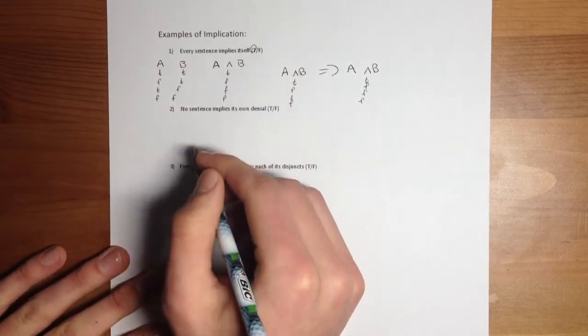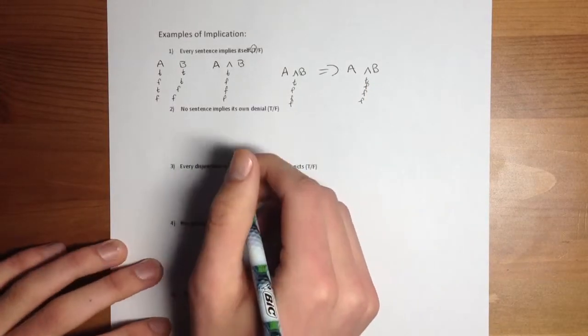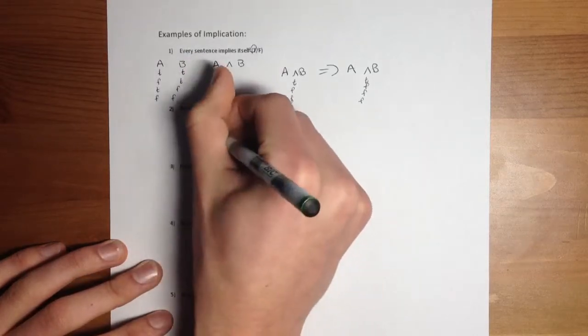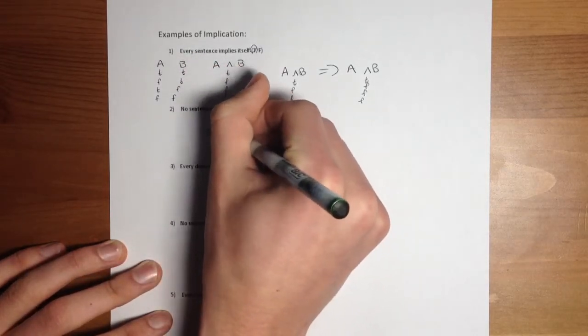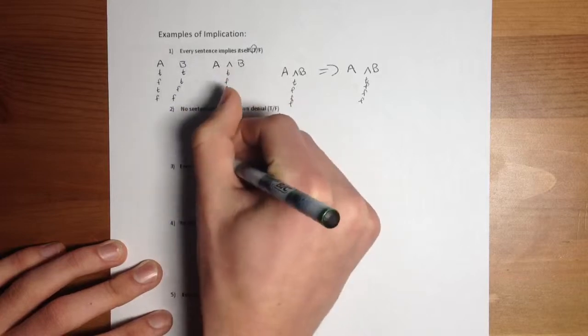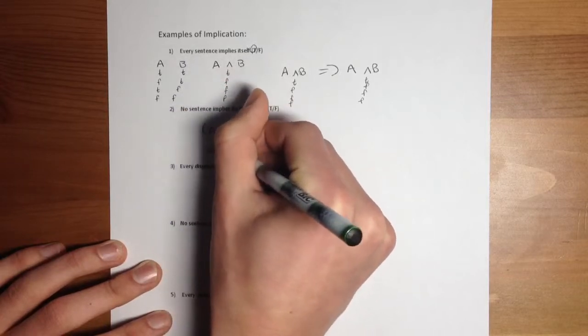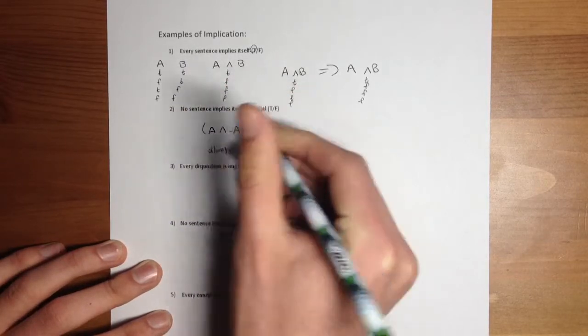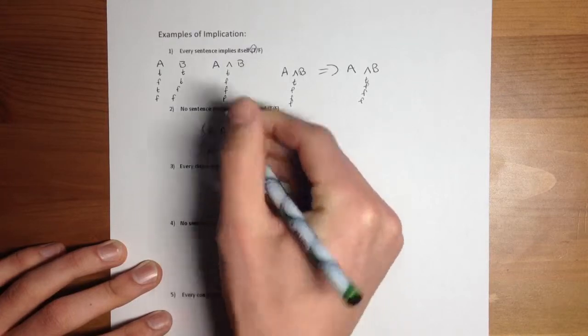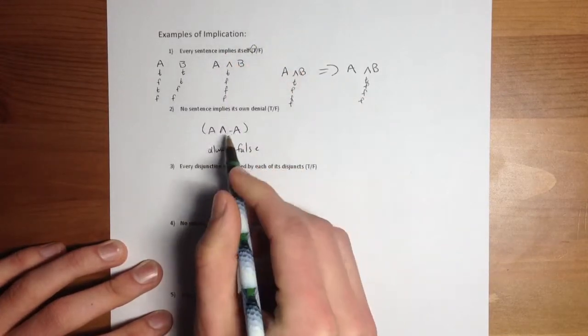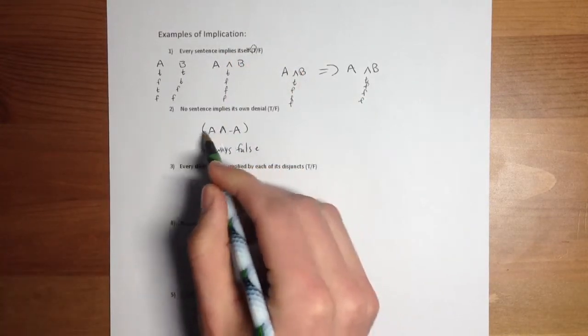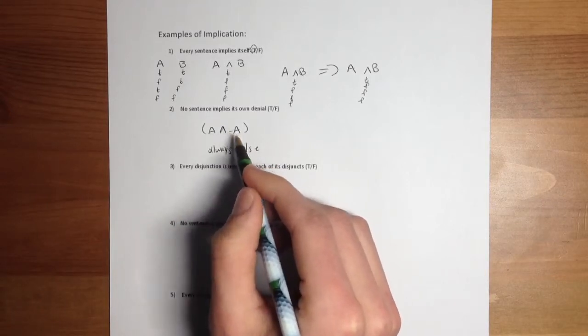So we'll move on to this one. No sentence implies its own denial. So for something like this, you're going to want to draw this sentence here, which is always false. So this little conjunction here makes, for this to be true, both of these need to be true, and they can't both be true because they're the opposites.